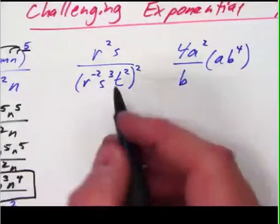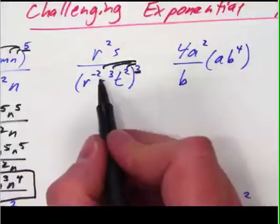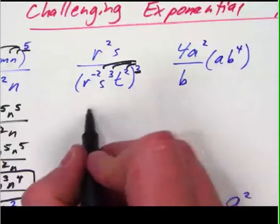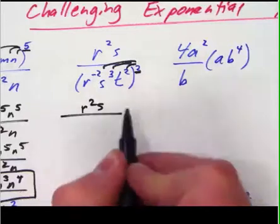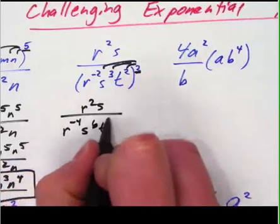Second question r squared s over all this, give this second power to all of these by multiplication because that's the power to the power property. So up top I've got r squared s, on the bottom I've got r to the negative 4, s to the sixth and then t to the 4.